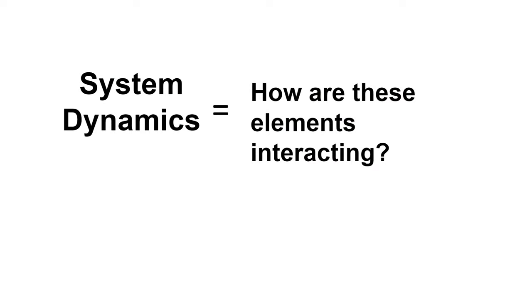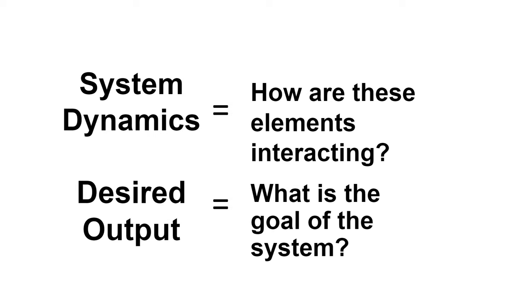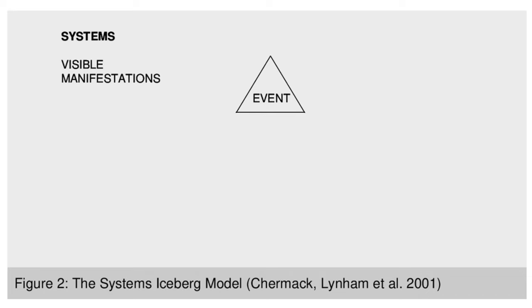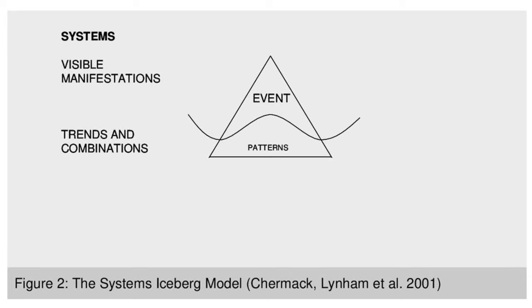We are going to constantly be asking these two questions: How are the elements interacting, or the system dynamics? And what is the goal of the system, or the desired output? A great way to begin systems mapping is through the iceberg model. The iceberg model reminds us that what we initially see on the surface isn't going to tell the whole story. At the top we have event. The second layer is patterns. If you view that event over time, you can maybe identify patterns.